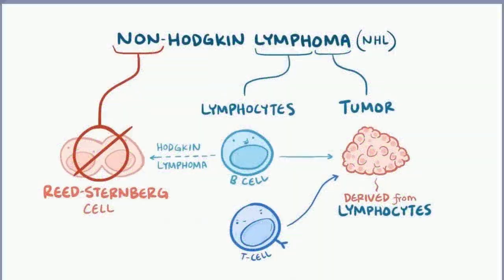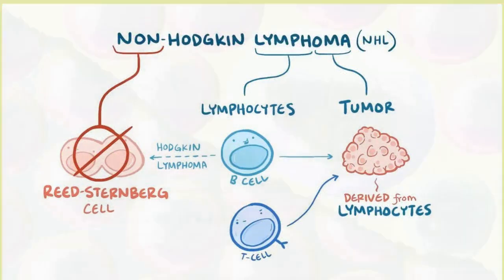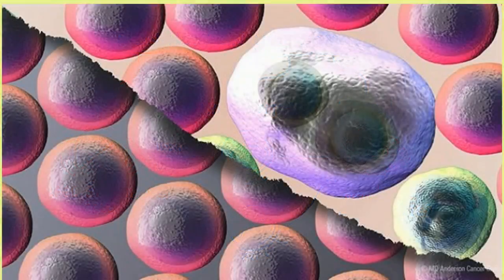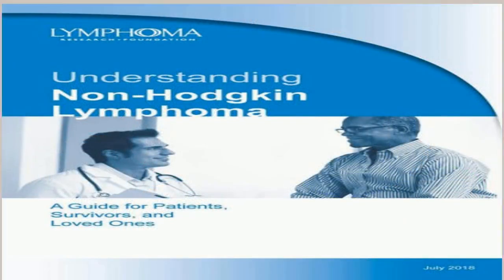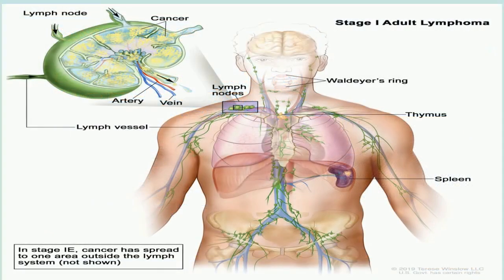Lymphoma refers to a malignancy of the lymphatic system. The lymphatic system is a network of nodes — knots of tissue connected by vessels. Together, the lymph nodes drain fluid and waste products from the body, acting as tiny filters removing foreign organisms and cells. Lymphocytes are a type of white blood cell that helps fight infections caused by bacteria, viruses, or fungi.